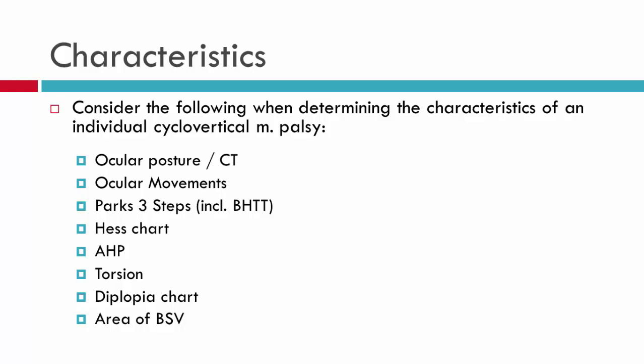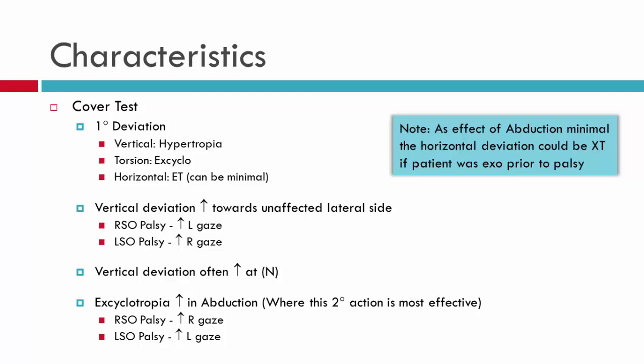When we're talking about the characteristics of the 4th nerve palsy, what we're focusing on is what are our expectations of the clinical findings when we assess a patient with a cyclovertical muscle palsy — specifically a 4th nerve palsy. We'll go through cover tests, test chart, torsion, and related areas in a patient with a 4th nerve.